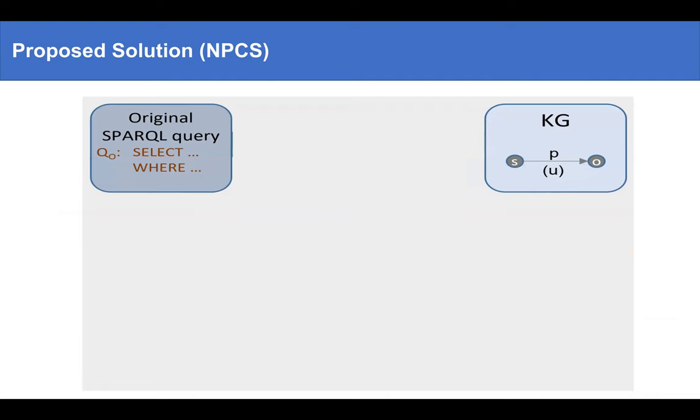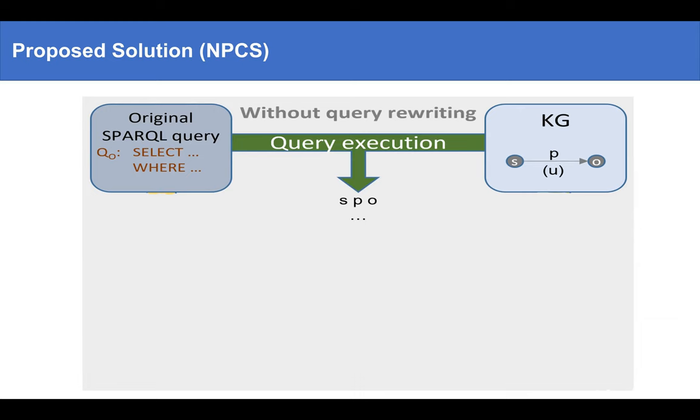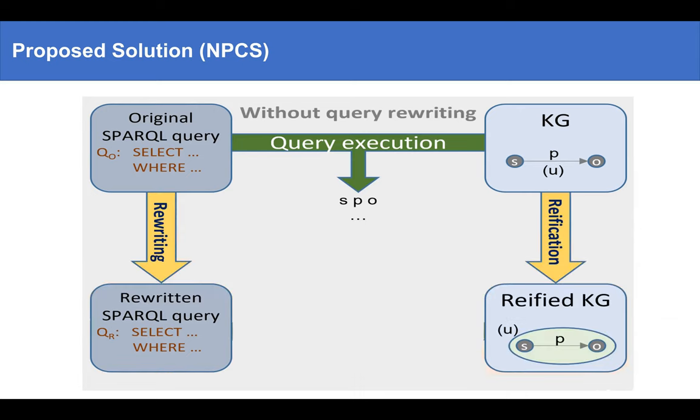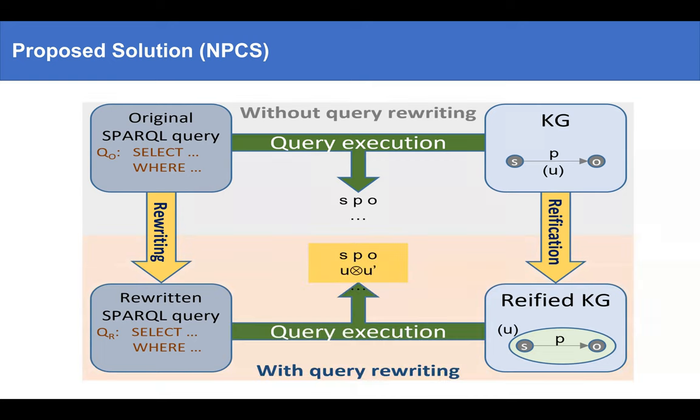Consider a graph and SPARQL query. If we execute a query, we get the result. Then we reify the graph and rewrite the query. We execute the rewritten query on the reified graph and we get the query result along with how provenance polynomial.